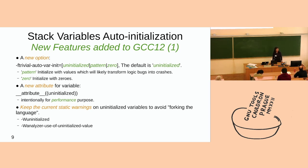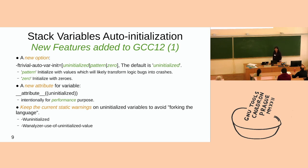The flag is called trivial-auto-var-init, but it actually initializes all automatic variables — whether they end up in a register or on the stack. If it's an uninitialized variable, we'll initialize it regardless of where it lives. The name 'trivial' follows Clang's naming convention, for compatibility.